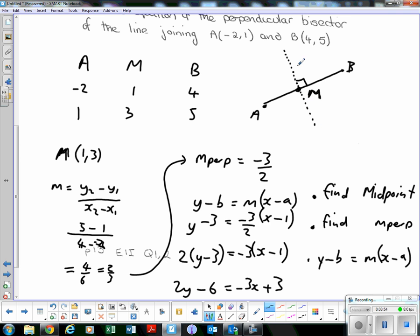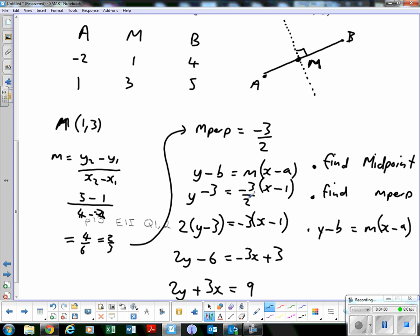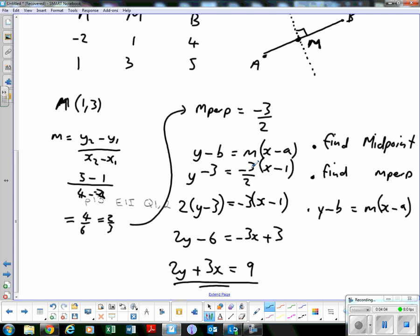So we're going to use point M and we're going to use the perpendicular gradient. Remember M is (1, 3). So y minus 3 equals -3 over 2 bracket x minus 1. Again, like in the last lesson, I don't want to be multiplying out this bracket by fractions. I want to bring the 2 up and times everything on this side by 2. So 2 bracket y minus 3 equals -3 bracket x minus 1.